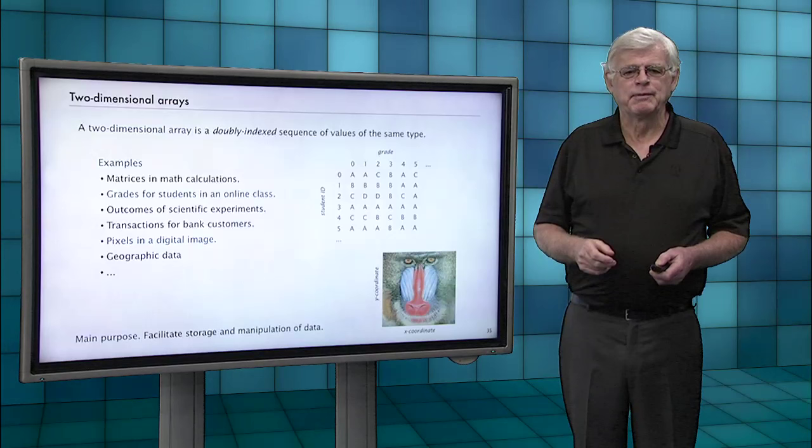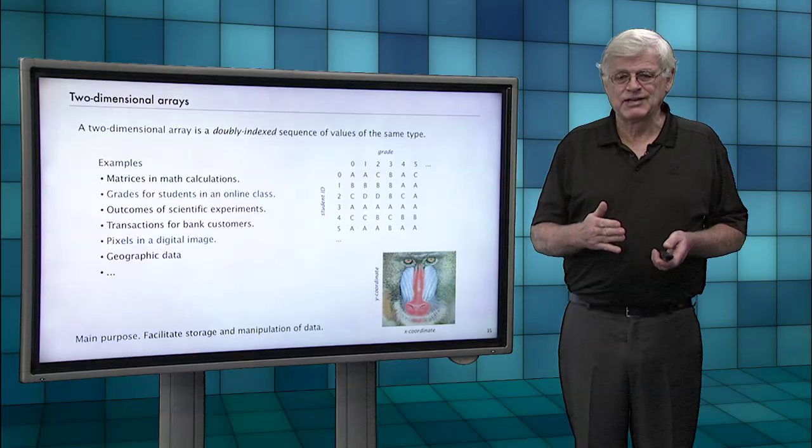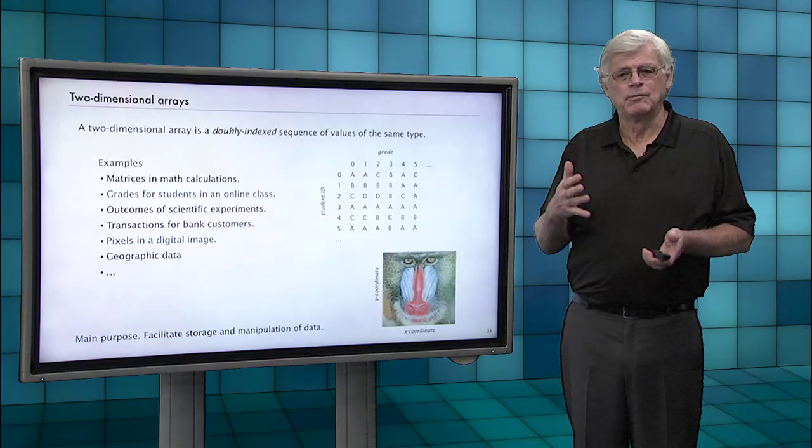And again, just as with one-dimensional arrays, we want to facilitate storage and manipulation of this data. And with two indices, we have more flexibility for data that calls for it.